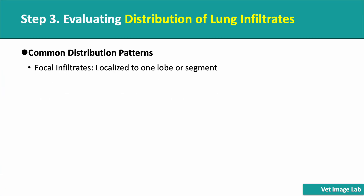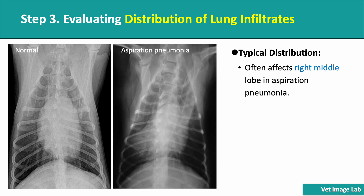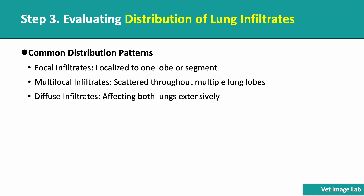Now let's move to Step 3: evaluating the distribution of lung infiltrates. The location and spread of infiltrates on X-rays can give us crucial clues about the underlying cause. If the infiltrates are focal — meaning confined to a single lobe — we often suspect conditions like lobar pneumonia or neoplasia. Here we have an example of a focal alveolar infiltrate. This dog has aspiration pneumonia. Notice how the opacity is concentrated in a specific region rather than being widespread. In aspiration pneumonia, infiltrates commonly affect the right middle lung lobe, as aspirated material tends to settle there due to gravitational and anatomical factors.